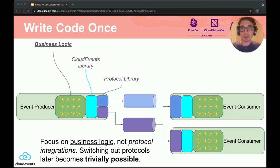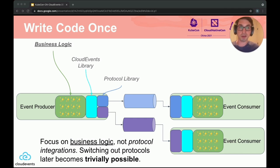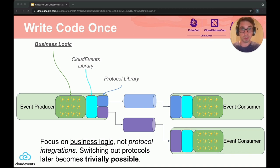In effect, what does this enable? First, this allows you to focus on your business logic instead of your protocol integration logic. Additionally, because CloudEvents defines the format in a protocol-agnostic specification with separate bindings that implement that specification for a particular protocol, you can switch protocols without switching formats. So if, for example, you're going from one queuing technology to another, this should just mean swapping out the library implementations for the selected protocol.